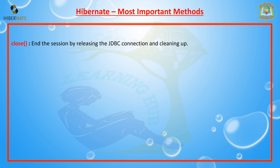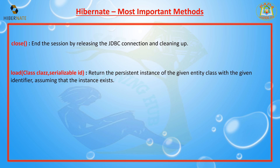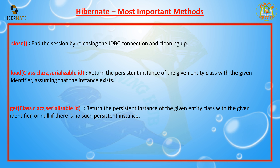The next method is load. The load method returns the persistent instance of the given entity class with the given identifier, assuming that the instance exists. The identifier means the primary key value. If the primary key ID is not available in the database, it will throw an exception.